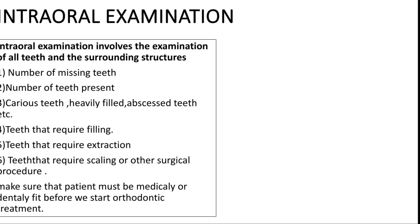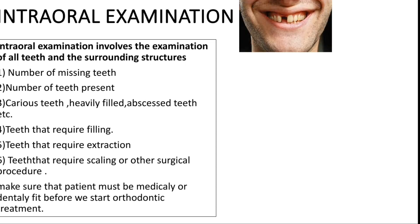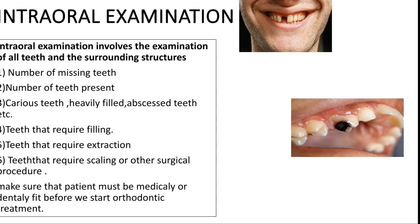First we will look for missing teeth, and we'll look for how many teeth are present. We also have to look at whether any deciduous teeth are present and what the dentition type is — whether it is permanent, mixed, or primary.